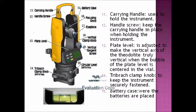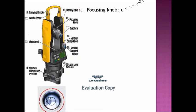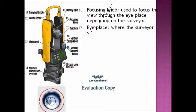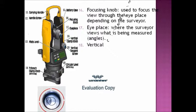Then we have the tribrach clamp knob to keep the instrument securely fastened. And then we have the battery case, where the batteries are placed. The focusing knob is used to focus the view to the eyepiece depending on the surveyor. The eyepiece is where the surveyor views what is being measured.